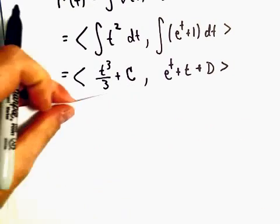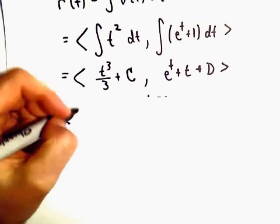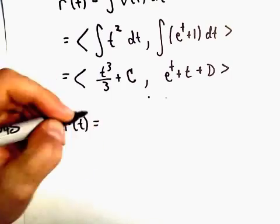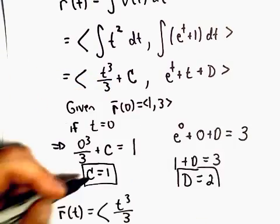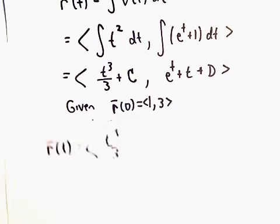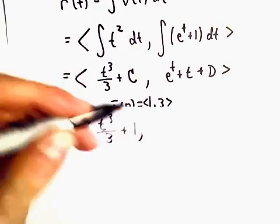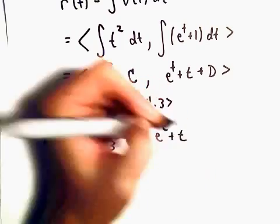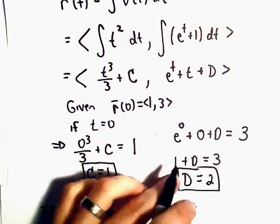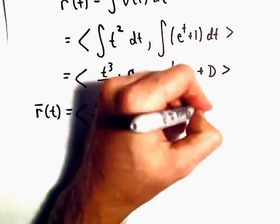All right, so really we know that we can describe our position vector r(t) as <t³/3 + c, e^t + t + d>, which is just <t³/3 + 1, e^t + t + 2>.